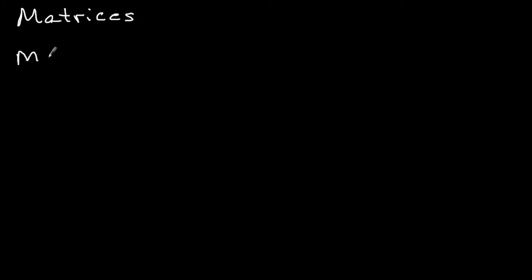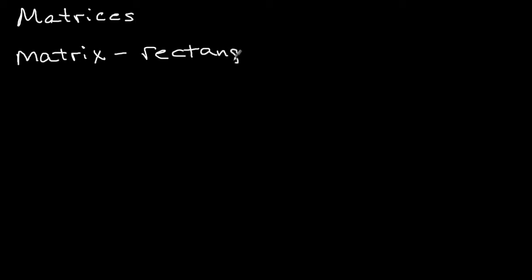Today we're going to be learning about matrices. A matrix is the singular form of matrices — it just means one matrix, but if you're talking about matrices, you're probably talking about two or more, since it's plural. A matrix is simply going to be a rectangular array of elements.